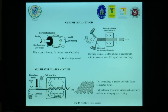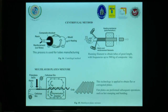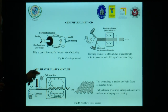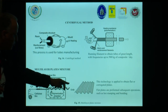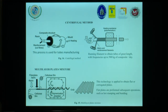The multi-layer plates mixture: this technology is interesting because it can be applied to obtain flat or corrugated plates. Flat plates are preformed for subsequent operations such as hot stamping and bending. The process uses cellulose film, resin, and fiberglass fabric; together inside a polymerization chamber, we get the final product.